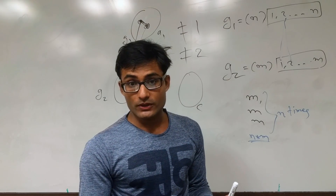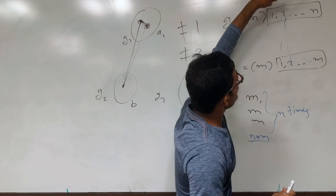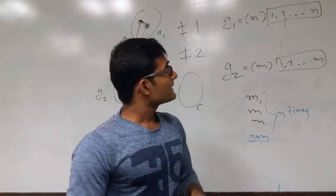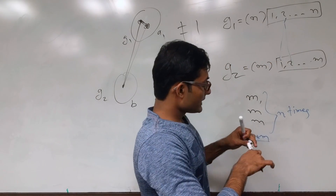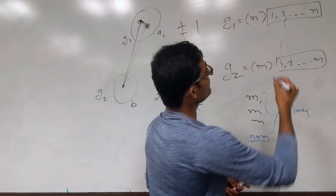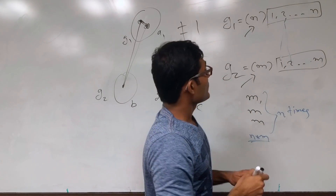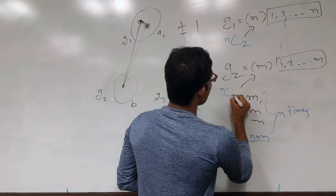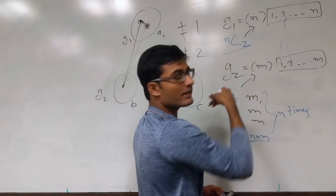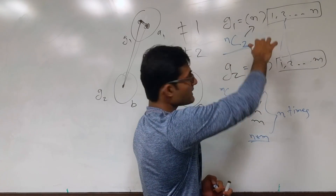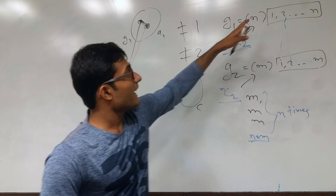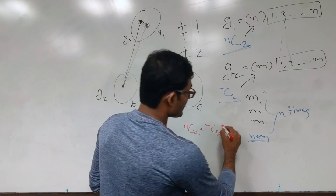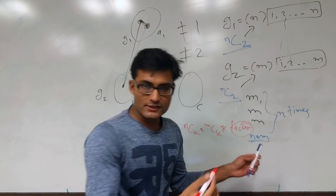Now, what if we have two edges between those two groups? What we are actually doing is taking two nodes from group 1 and two nodes from group 2, then mapping between them. How many ways to choose two nodes from group 1? That is NC2. From group 2 it is MC2. So if there are K edges between the two groups, we choose NCK nodes from group 1 and MCK nodes from group 2. But there is one more factor to multiply, which I will explain now.